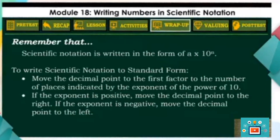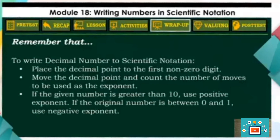Remember that scientific notation is written in the form of A times 10 to the N power. To write scientific notation to standard form, move the decimal point of the first factor by the number of places indicated by the exponent of the power of 10. If the exponent is positive, move the decimal point to the right; if negative, move it to the left. To write a decimal number to scientific notation, place the decimal point after the first non-zero digit, count the number of moves for the exponent. If the given number is greater than 10, use a positive exponent; if between 0 and 1, use a negative exponent.